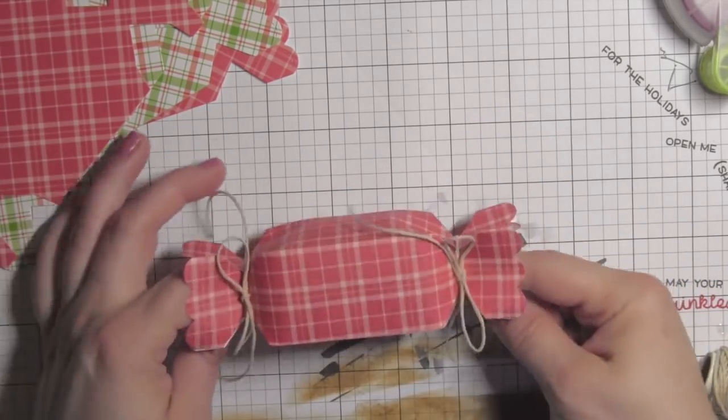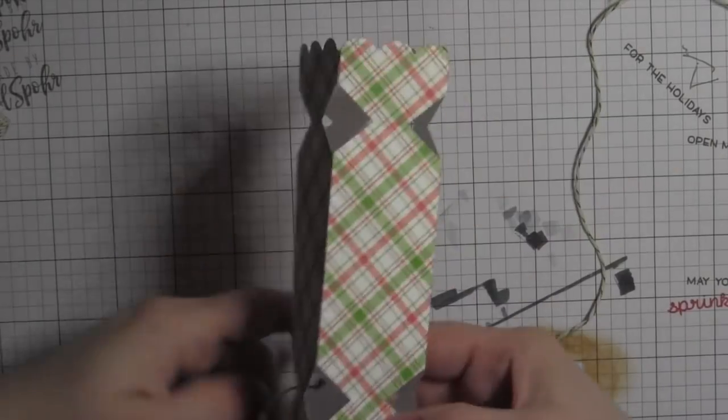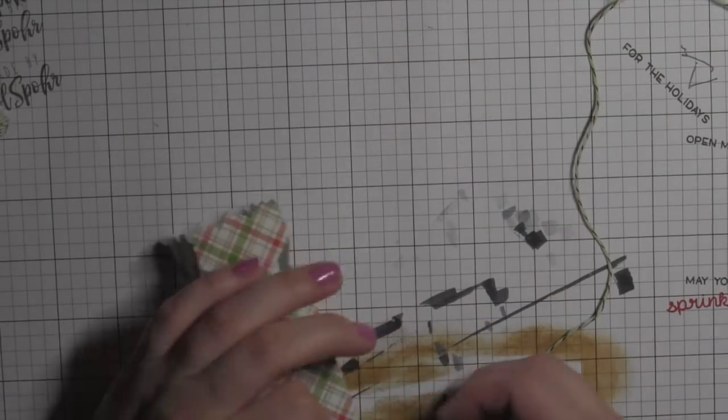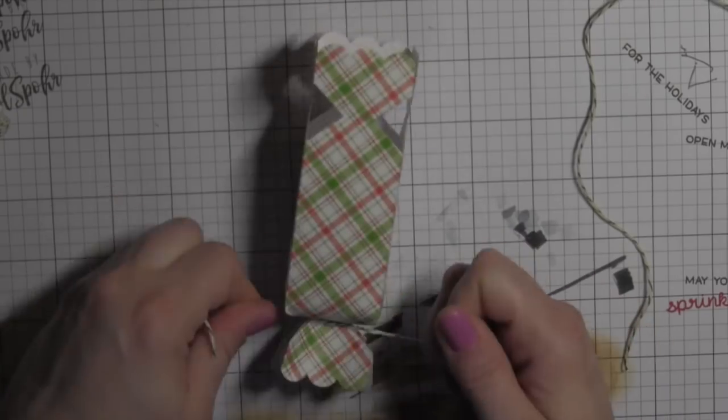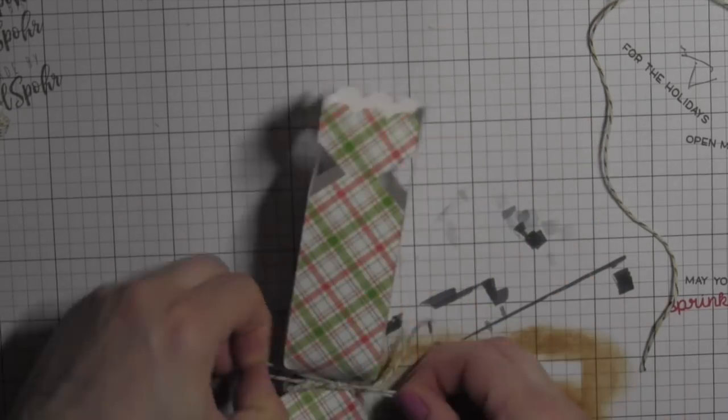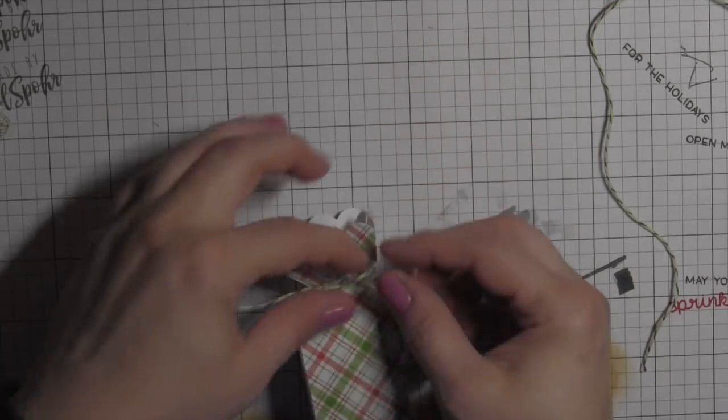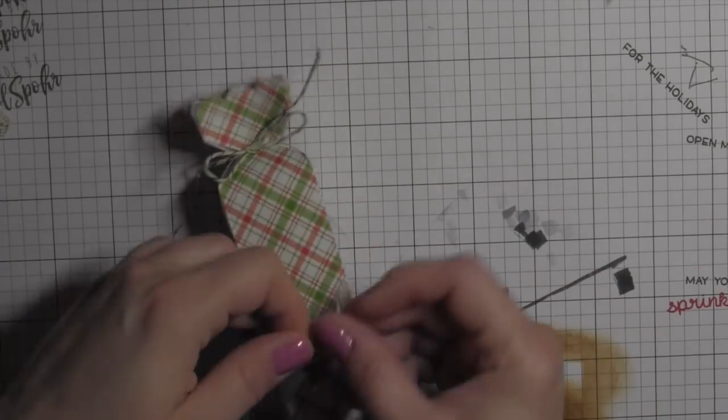Nice little candy box shape. These would be great, yes for gifts, but you could also create an advent calendar out of all of these. Put numbers on them and have a countdown to Christmas for children, grandchildren, nieces, nephews, or just for yourself.